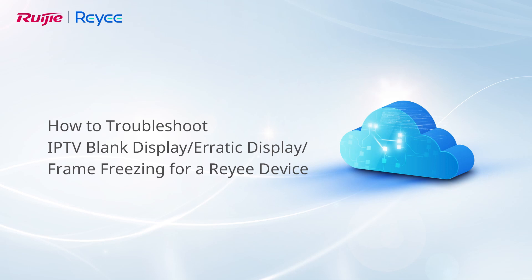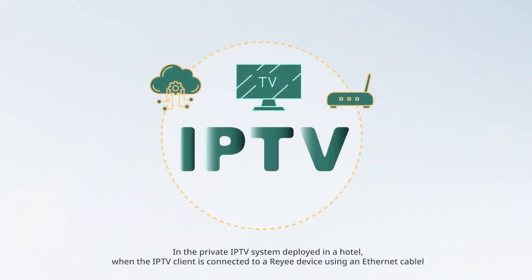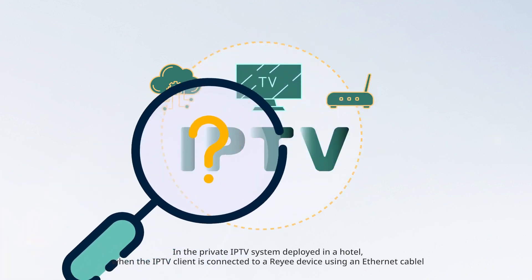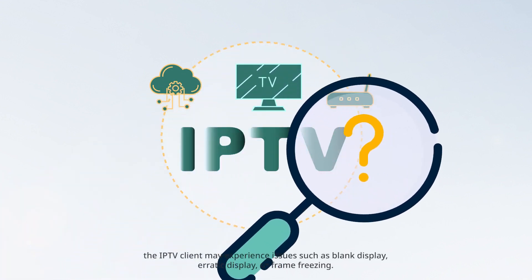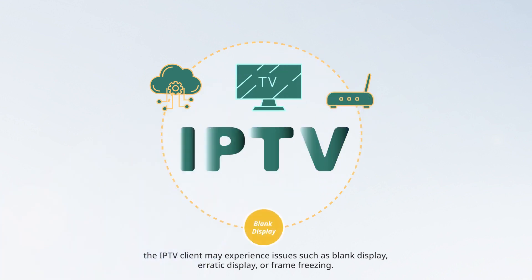How to troubleshoot IPTV blank display, erratic display, and frame freezing. In the private IPTV system deployed in a hotel, when the IPTV client is connected to a RE-E device using an Ethernet cable, the IPTV client may experience issues such as blank display, erratic display, or frame freezing.